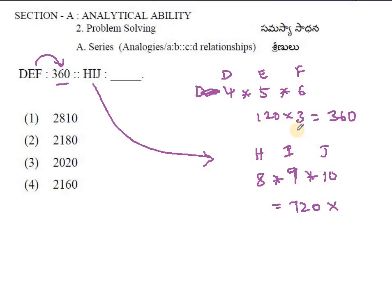We multiply this by 3 again because we multiplied by 3 in the first case. 720 multiplied by 3 means 72 into 3 is 216 followed by 0, giving 2160. The correct answer is option number 4.